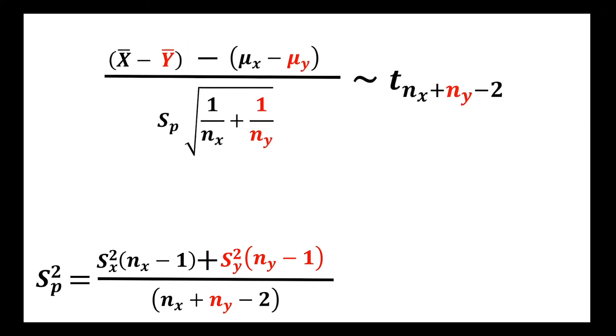So this standardization, this test statistic, is going to be modeled or can follow a t-distribution where the degrees of freedom are nx plus ny minus two. I hope you can see the similarities there with some slight differences.